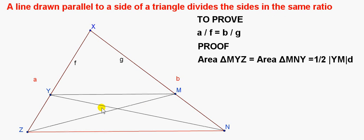To prove the theorem, we construct two triangles by connecting point Z to M and point N to Y. Then we look at the area of triangle M, Y, Z and the area of triangle M, N, Y.